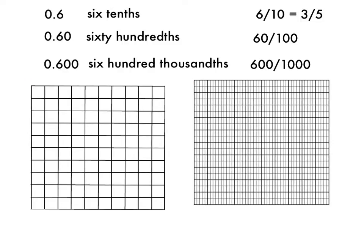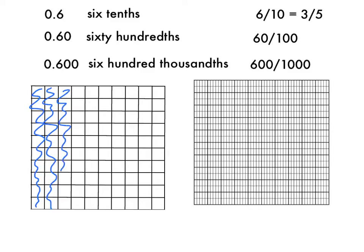Now I'm going to represent the decimal six-tenths, which is also the same as sixty-hundredths, which is also the same as six-hundred-thousandths. Let's start by showing six-tenths or sixty-hundredths, because we're familiar with those. That would be like shading in six columns inside of this hundredths grid. So that is showing six-tenths.